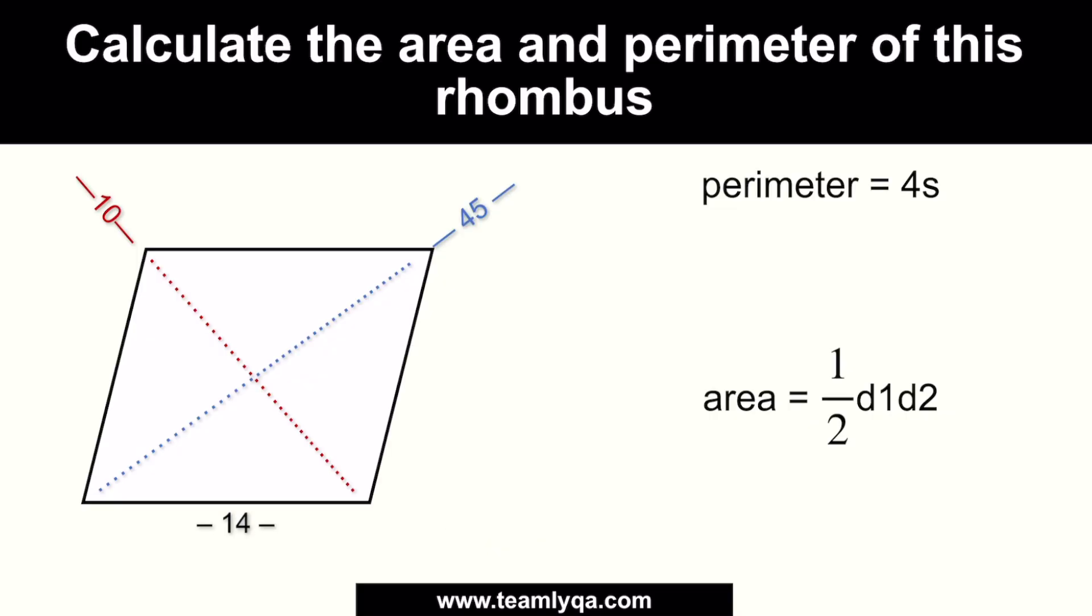Alright. Let's see how you did. So, this is the information given to us. One side is given, which is 14. Then two diagonals are given. Now, if you notice, the height is not given. That means for our area, the formula we'll use is the one with the first and second diagonals.